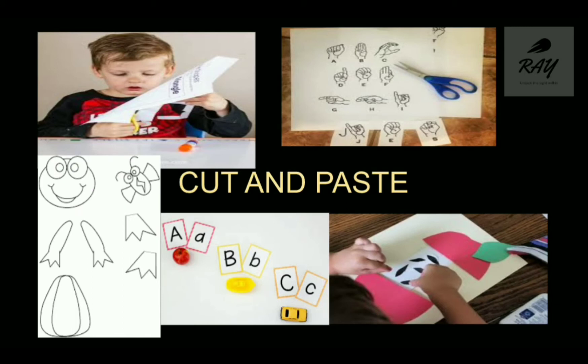The fourth activity is 'Cut and Paste.' Matching alphabet letters are cut and pasted — for example, cut the letter A and paste it onto the corresponding A. Alternatively, children can cut standing lines, slanting lines, or vertical lines and place them together to form a letter. It can be a closed curve or an open curve that they join together to make the letter.